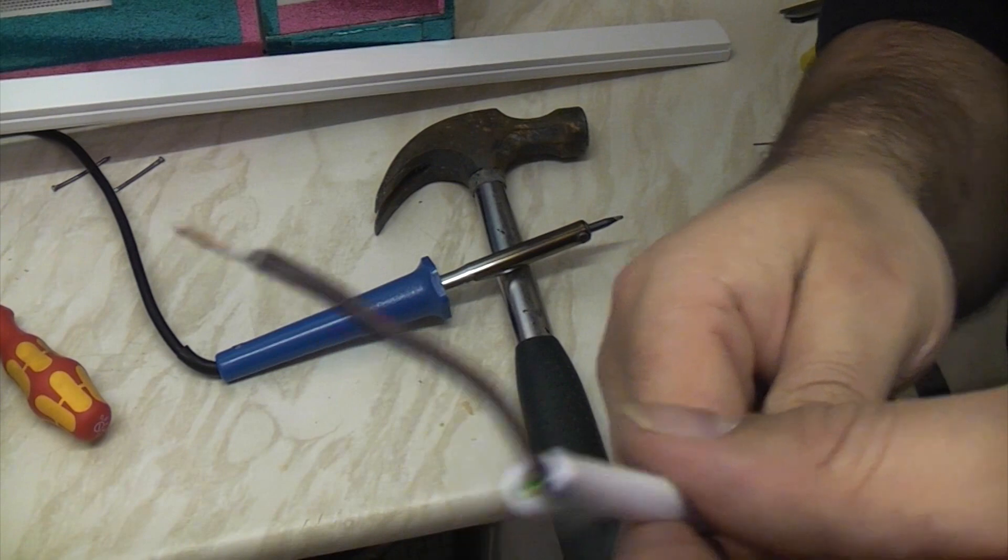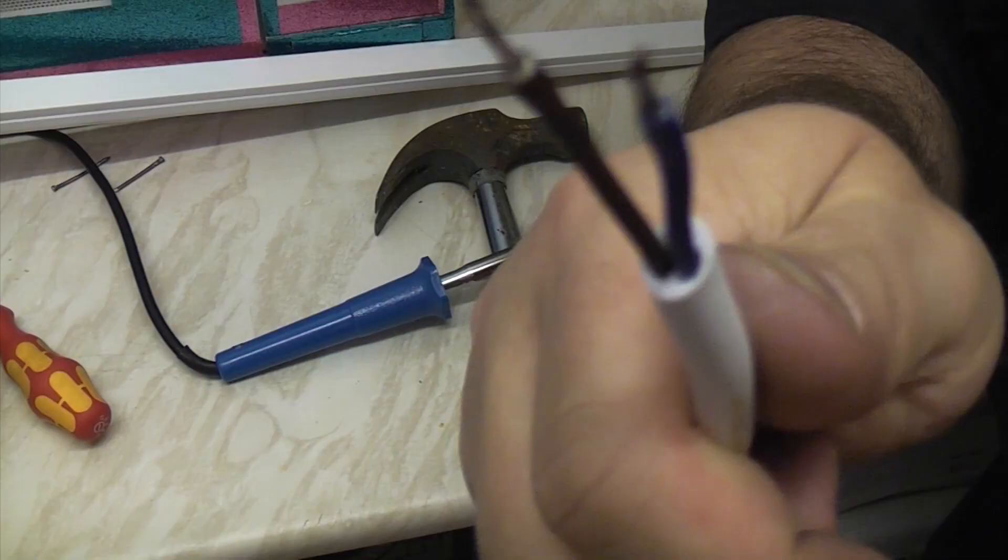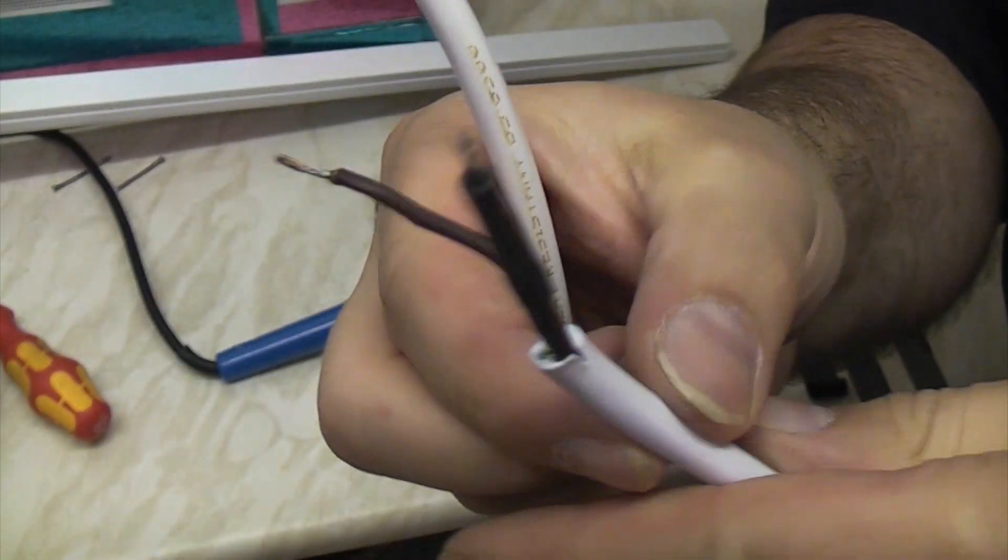So we are just going to do that on the brown wire there, and then we are going to do it to the other end as well. And then we know that this is our switching cable.